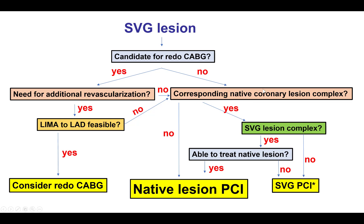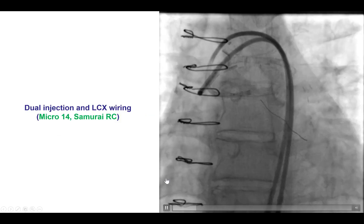We do know that native coronary artery interventions have better short and long-term outcomes than intervening on the vein graft. In this particular case, as shown in the next image, the native coronary artery appeared to not be particularly complex, which might preferentially lead to treating that native coronary artery lesion.